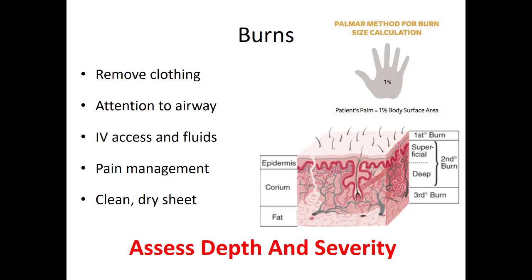A quick review on burn management: document whether it's superficial, deep, or third degree, and use the patient's palm as approximately 1% of their body surface area to estimate burn extent. Do your best to get all clothing removed. Pay close attention to the airway if there are inhalation concerns. Obtain IV access if you can, mostly for fluids and pain management. Don't put any ointments or salves on burns — cover them with a clean dry sheet and keep the patient warm after completing your primary and secondary trauma surveys.